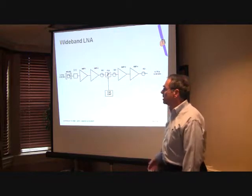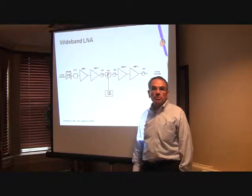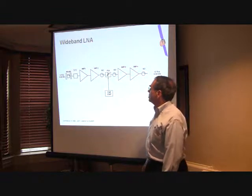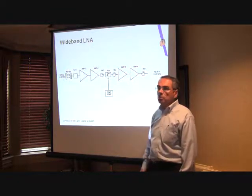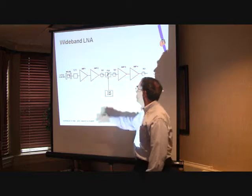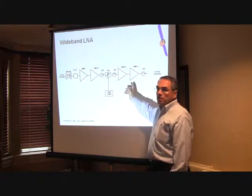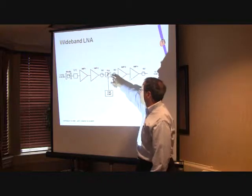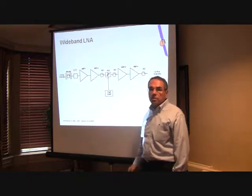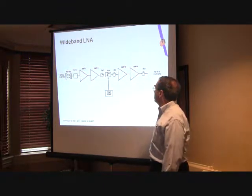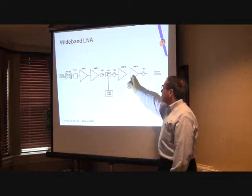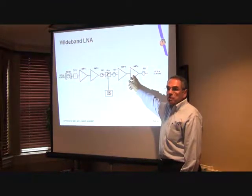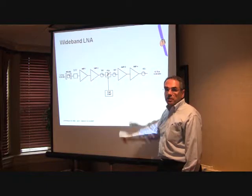The input side to a bent pipe repeater is a wideband receiver. This particular device is the low-noise front end, which has four stages of gallium arsenide field effect transistor amplification. It has temperature compensation to keep the gain constant through that device, and the final stage is the one that can introduce intermodulation distortion, which has to be held to a low level.